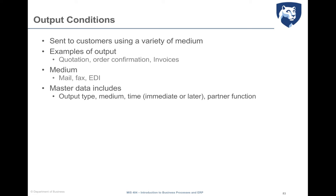A variety of outputs can be generated during the fulfillment process — like quotations, confirmations, invoices, delivery documents, and so on — and this output must be communicated to the customer. The data needed to perform this task are included in the output condition. The condition technique used to determine pricing is also used to determine how outputs for the process are communicated to the customer.